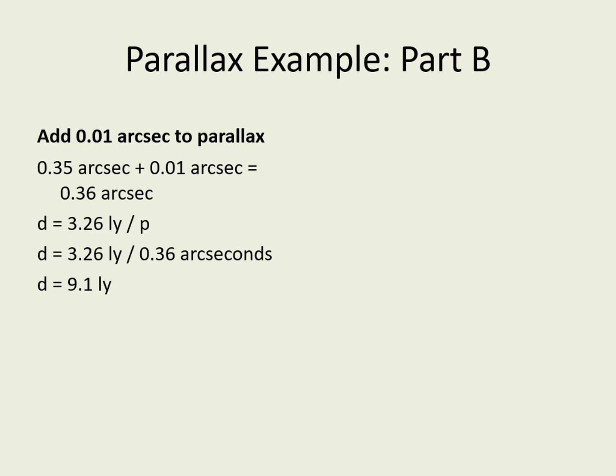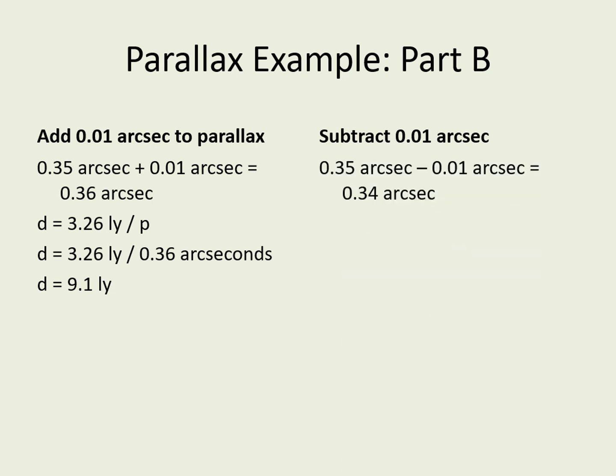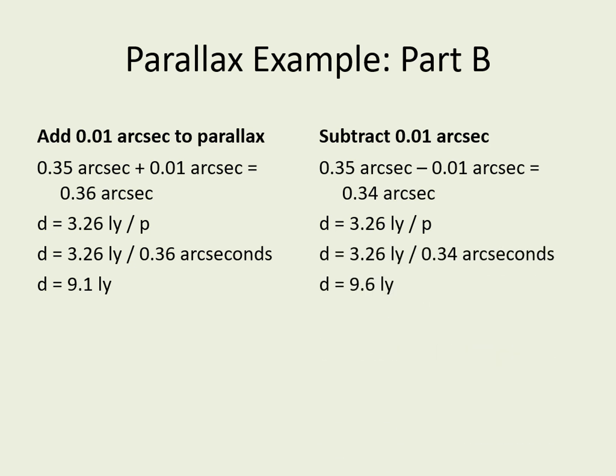Now we do the same thing, but subtract the uncertainty from the parallax angle, giving 0.34 arc seconds. When we put this into the equation, we get 9.6 light-years. So in fact, the distance could be as little as 9.1 light-years and as much as 9.6 light-years.